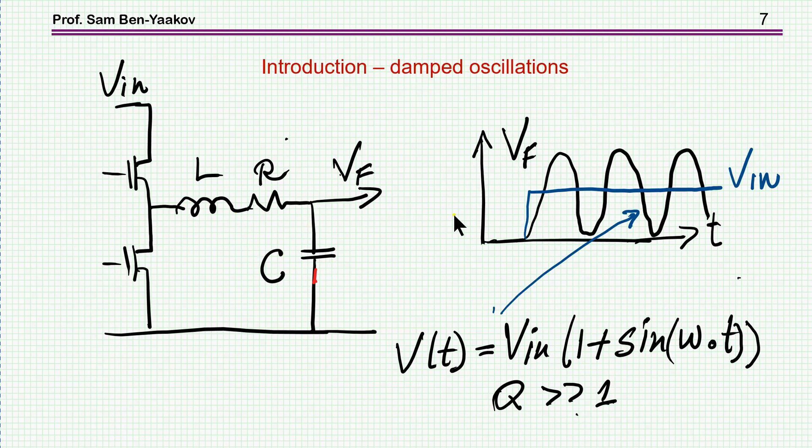If we feed a step to a filter like this, this is what we are going to see. We are going to see a waveform which is hardly damped. It is around V in. This is V in here, and actually it will reach twice V in here. The expression for this waveform, for this region here, I'm not talking about the initial value, is V in times 1 plus sin omega 0 t. This is the sinusoidal riding on the V in. And this is for the quality factor which is much larger than 1.